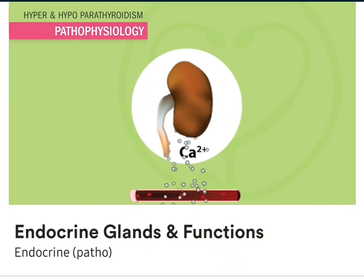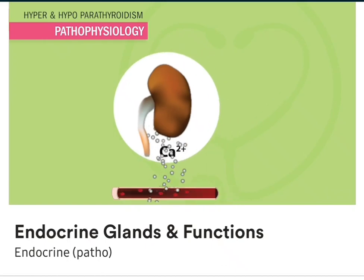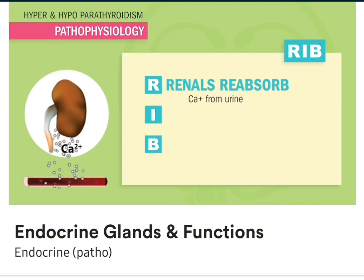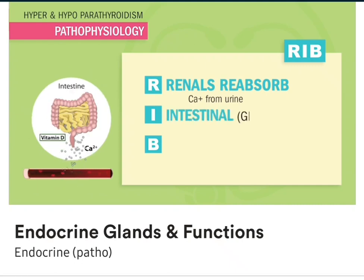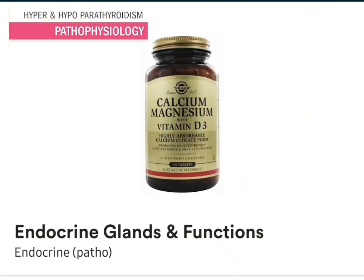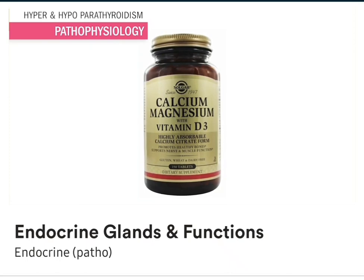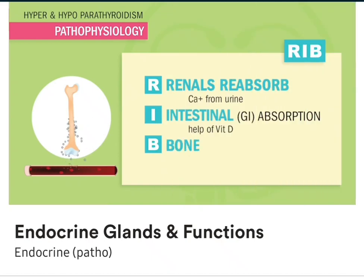Calcium is increased in the blood by three ways — remember the acronym RIB. R is for renals, which reabsorb calcium so it's not lost. I is for intestines — they help increase blood calcium by absorbing it from food, with the help of vitamin D activation. Both calcium and magnesium love vitamin D and they all work together. And B is for bone — since our hard bones are made up mostly of calcium, but when your body needs more calcium, it usually drains the bones to get it.